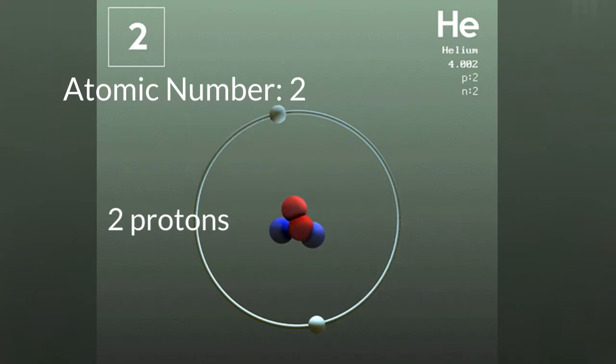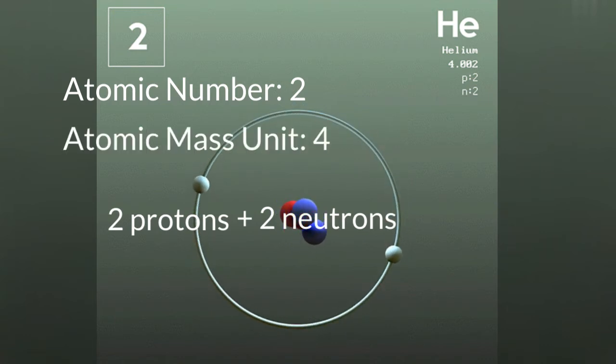Now, add the total number of neutrons to how many protons are present in the helium atom, and you get the atomic mass unit. In our case, our answer will be a mass of 4 amu.